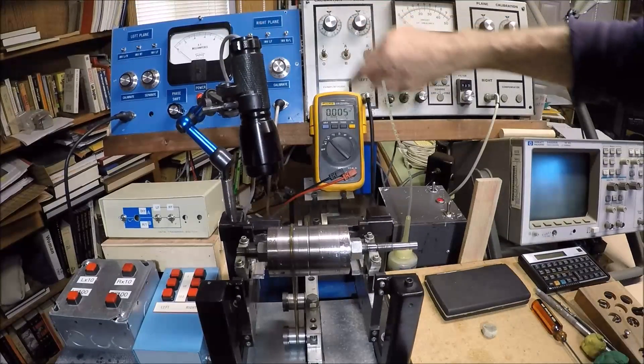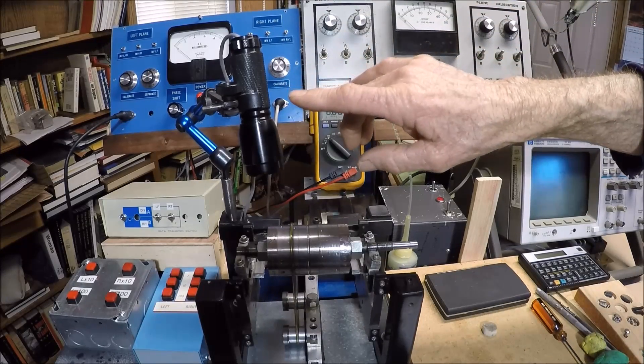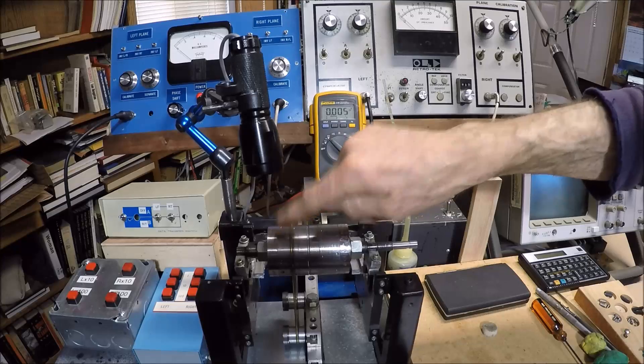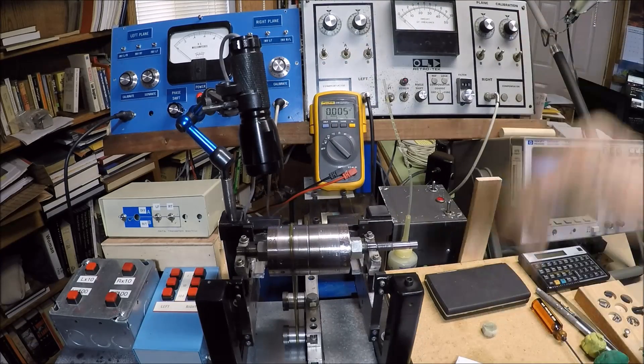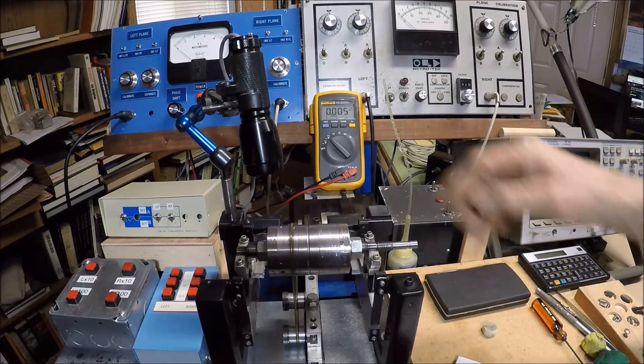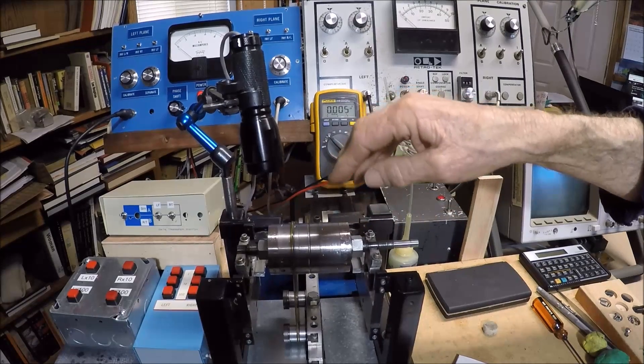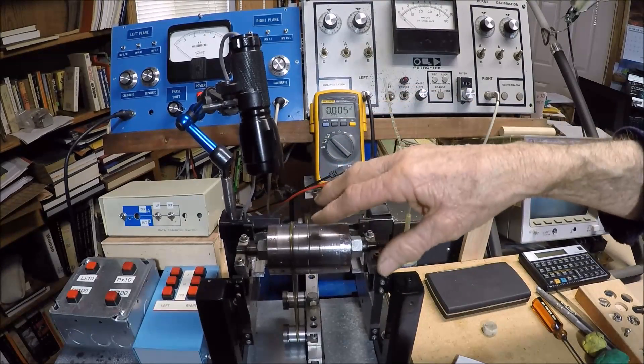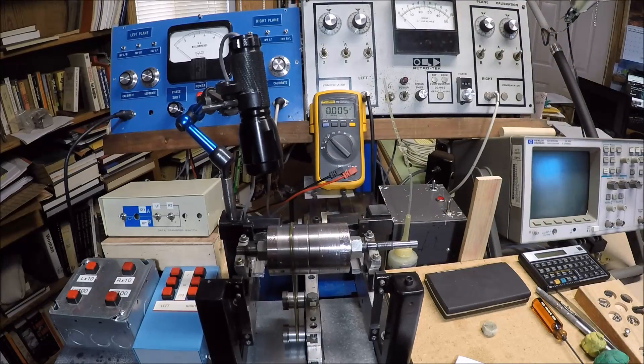And I can read the amount of unbalance on the meter. There's an analog meter. I can also read it on a digital meter. And the other piece of information that I need is the location, and that is shown by a strobe flash. Pickups, amplifier, information, the amount, phase angle. So the rotor is now unbalanced. And when I come back, I'm going to move the camera around and I'm going to show you this thing in operation.